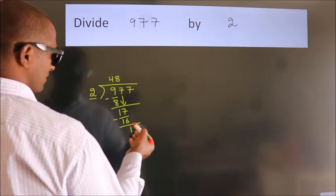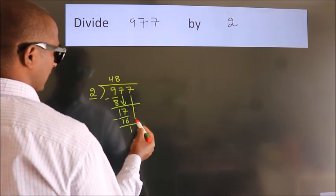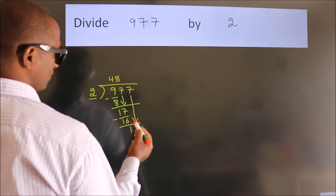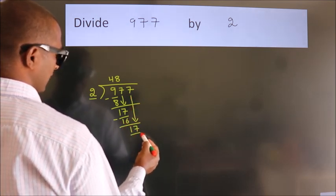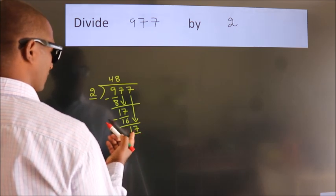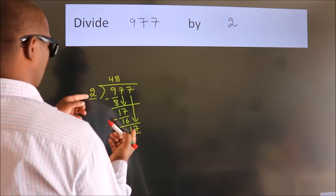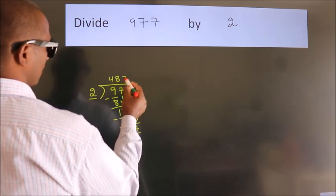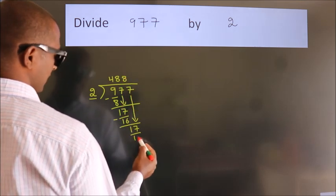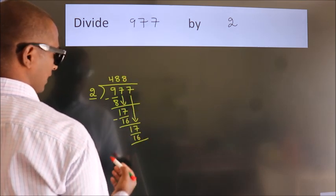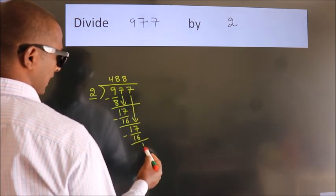After this, bring down the beside number. So 7 down, so 17. A number close to 17 in 2 table is 2 eights, 16. Now we subtract. We get 1.